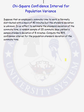Suppose that an employee's commute time to work is normally distributed with a mean of 40 minutes but an unknown standard deviation. In an effort to estimate the standard deviation of the commute time, a random sample of 20 commute days yielded a sample standard deviation of 8 minutes. We are to compute the 90% confidence interval for the population standard deviation of the commute time.